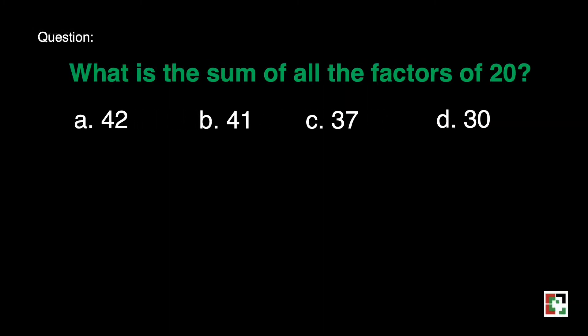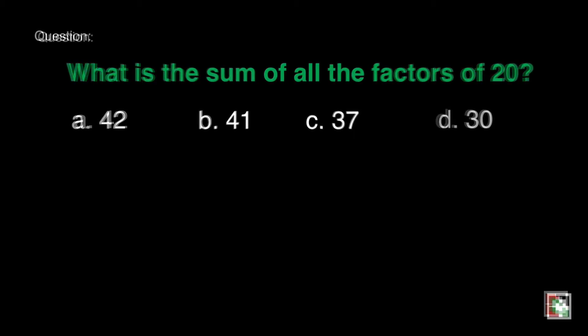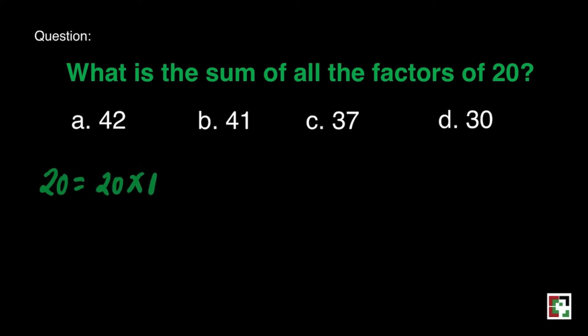Next question. What is the sum of all the factors of 20? A, 42. B, 41. C, 37. D, 30. We may list all the factors of 20. Let's have 20 times 1, 10 times 2. We also have 5 times 4.